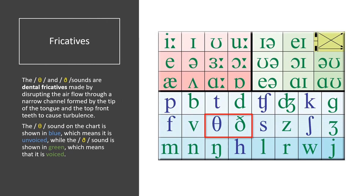Fricatives. The TH and TH sounds are dental fricatives made by disrupting the airflow through a narrow channel formed by the tip of the tongue and the top front teeth to cause turbulence. The TH sound on the chart is shown in blue, which means that it is unvoiced, while the TH sound is shown in green, which means that it is voiced.